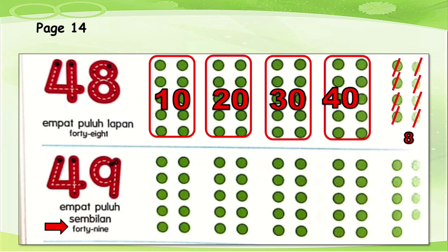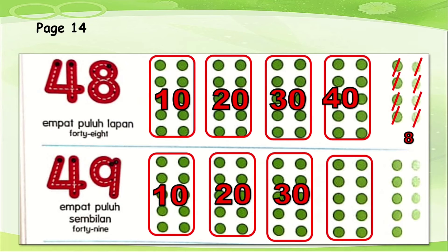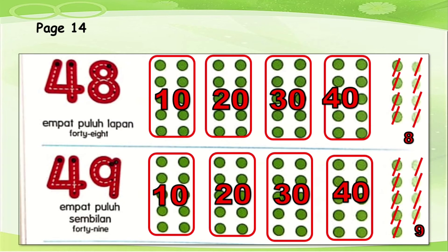Again, we have 4 groups: 10, 20, 30, and 40. Now let's count the balance: 1, 2, 3, 4, 5, 6, 7, 8, 9. Very good. Can you see there? We have 40 in groups and 9 one by one. So 40 and 9 together will be 49.